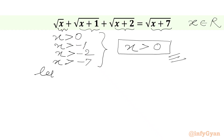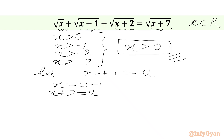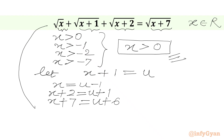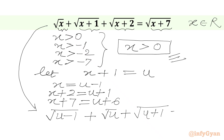Now we are going to use substitution. Let x plus 1 equal to u. So x will be equal to u minus 1, x plus 2 will be u plus 1, and x plus 7 will be u plus 6. So we can rewrite our equation: square root of (u minus 1) plus square root of u plus square root of (u plus 1) equals square root of (u plus 6).